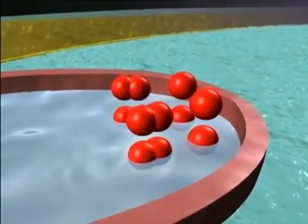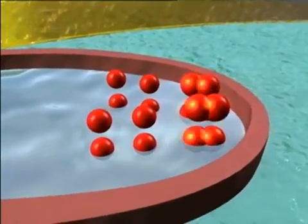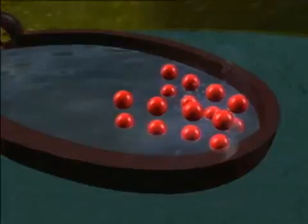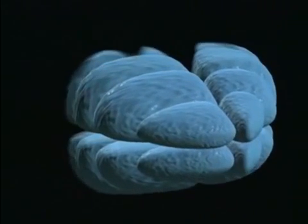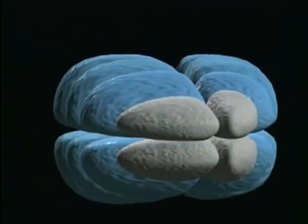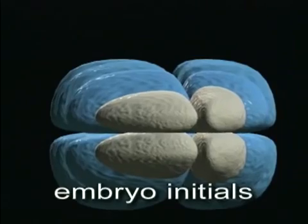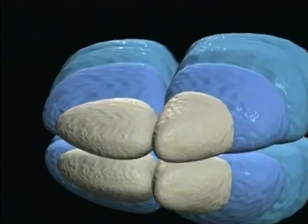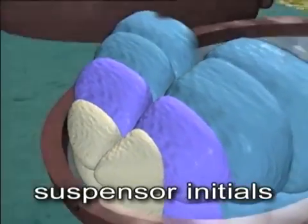Successive divisions result in a 16-celled embryo. The four cells at the base of the archegonium are embryo initials. The four cells of the adjacent tier are suspensor initials.